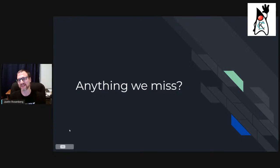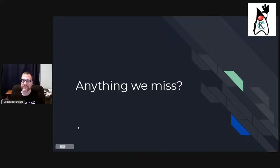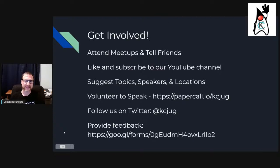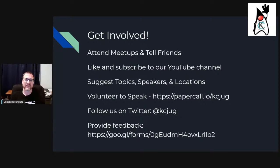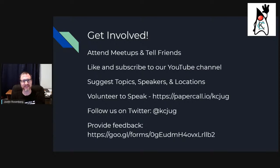Billy mentions that the two features I mentioned — Panama and Amber — are part of longer-running projects within the OpenJDK ecosystem. To get involved, you can attend meetups, tell your friends about the YouTube channel, and come back in person when we return. Like and subscribe to the YouTube channel, suggest topics, speakers, and locations. To volunteer to speak, there's the PaperCall.io at KCJug, and KCJug on Twitter.